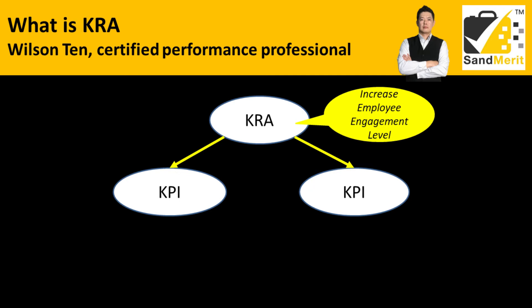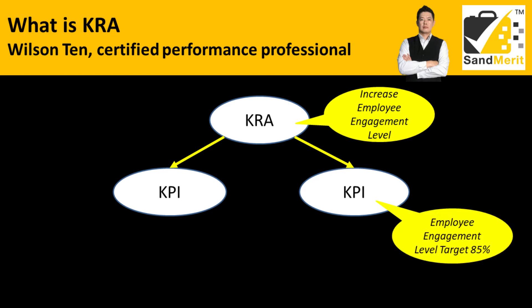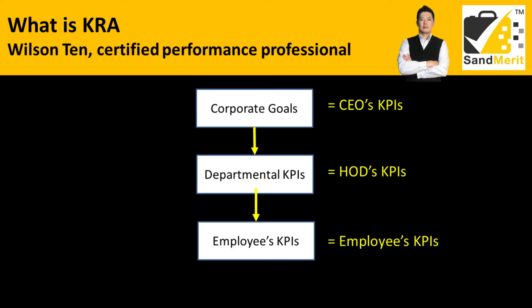Then you further cascade it down into KPI. KPI stands for key performance indicator. A set of KPIs are established to measure performance in key result areas, and by definition link back to the achievement of department and organization objectives and the organization's goals. KPIs have to be very specific and measurable with a target. In this example, the KPI is the employee engagement level, targeted at 85%.